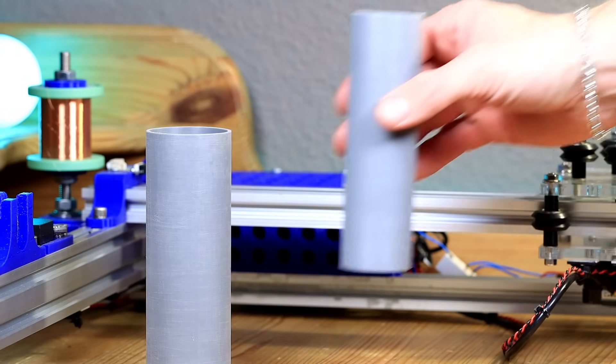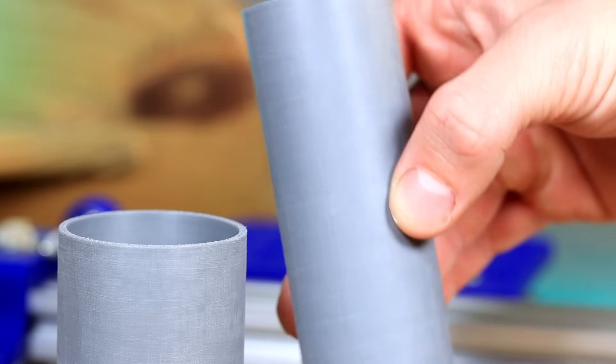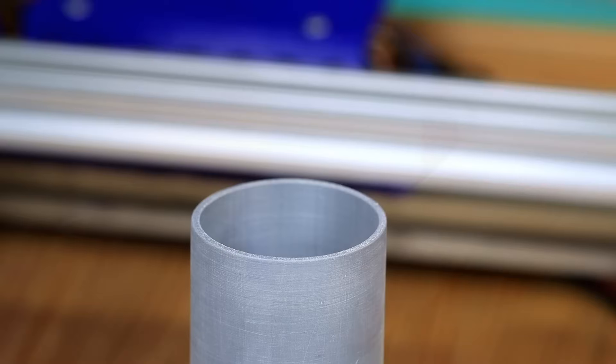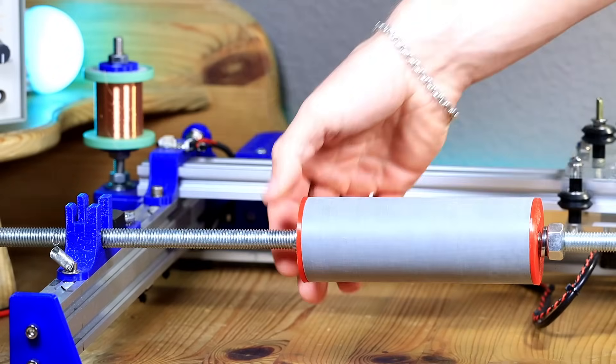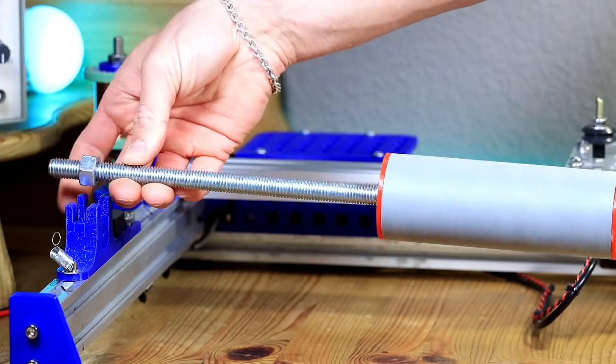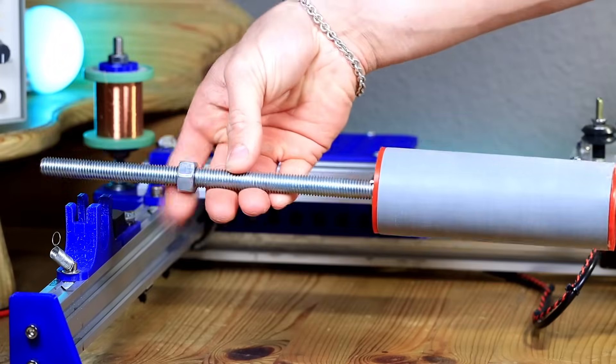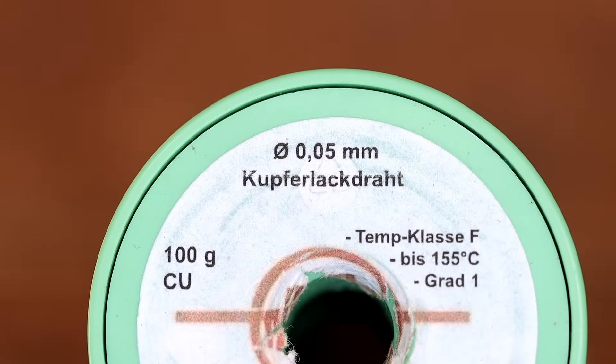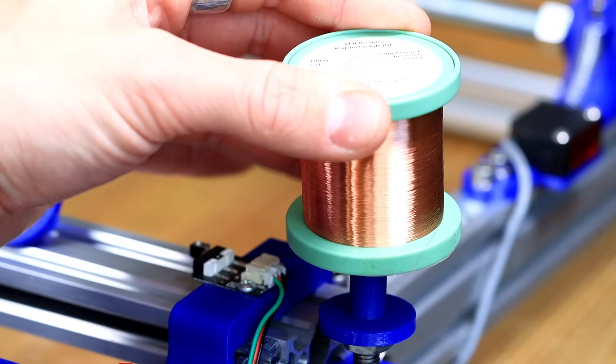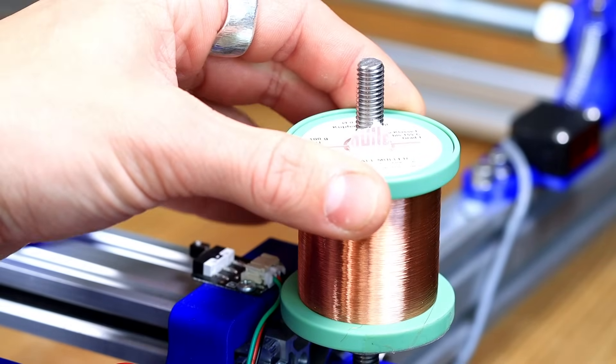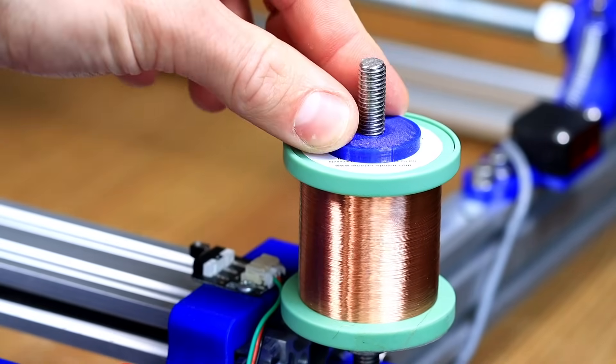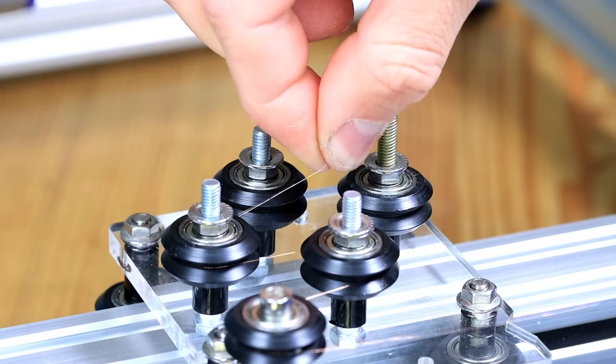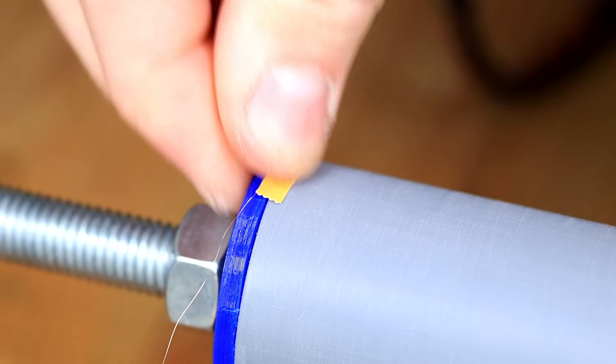We will now wrap these PVC pipes. I have sanded them a bit so that the wire holds better. We now attach the tube on the axle. Here we definitely have to think about another system because attaching the tube is really nerve-wracking. The coil is later wound with a super thin wire. The wire is as thin as my hair, about 0.05 mm. To start winding we first have to clamp the spool. The wire is then fed through the pulleys on the slider and attached to the tube with some tape.